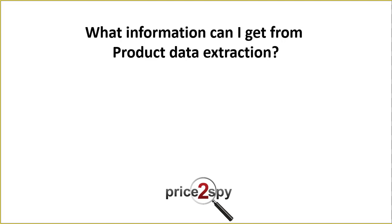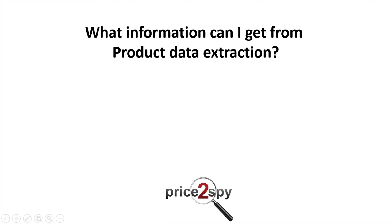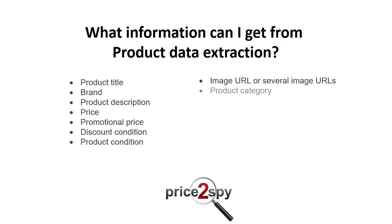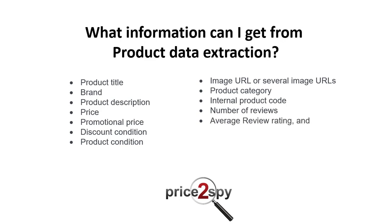What information can I get from product data extraction? You can get any sort of data which is shown on a product's page. For example: product title, brand, description, price, promotional price, discount conditions, product condition, image URL or several image URLs, product category, internal product code, number of reviews, average review rating, and review details — for example, date, review poster, and review body.